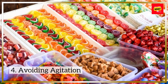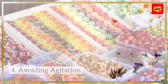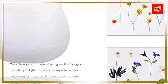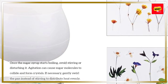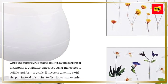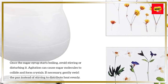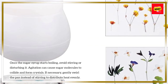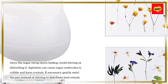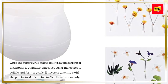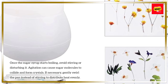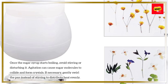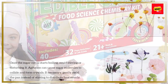Avoiding Agitation: Once the sugar syrup starts boiling, avoid stirring or disturbing it. Agitation can cause sugar molecules to collide and form crystals. If necessary, gently swirl the pan instead of stirring to distribute heat evenly.